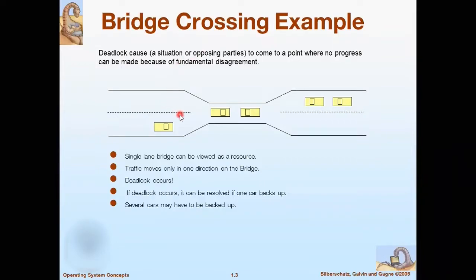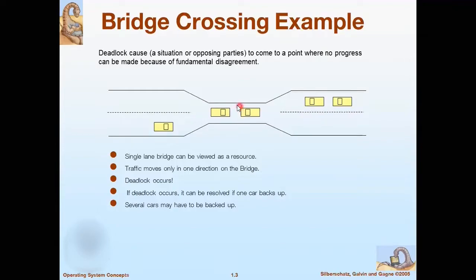We can say it is a problem or a situation where two processes sharing the same resources are effectively preventing each other from accessing the resources. We can see it in this narrow bridge crossing example, where the single lane bridge can be taken as a resource and the traffic or vehicles on the bridge can move only in one direction at a time. Here, traffic approaches from both directions and gets stuck at a point because the bridge is narrow and there is not enough space to cross.